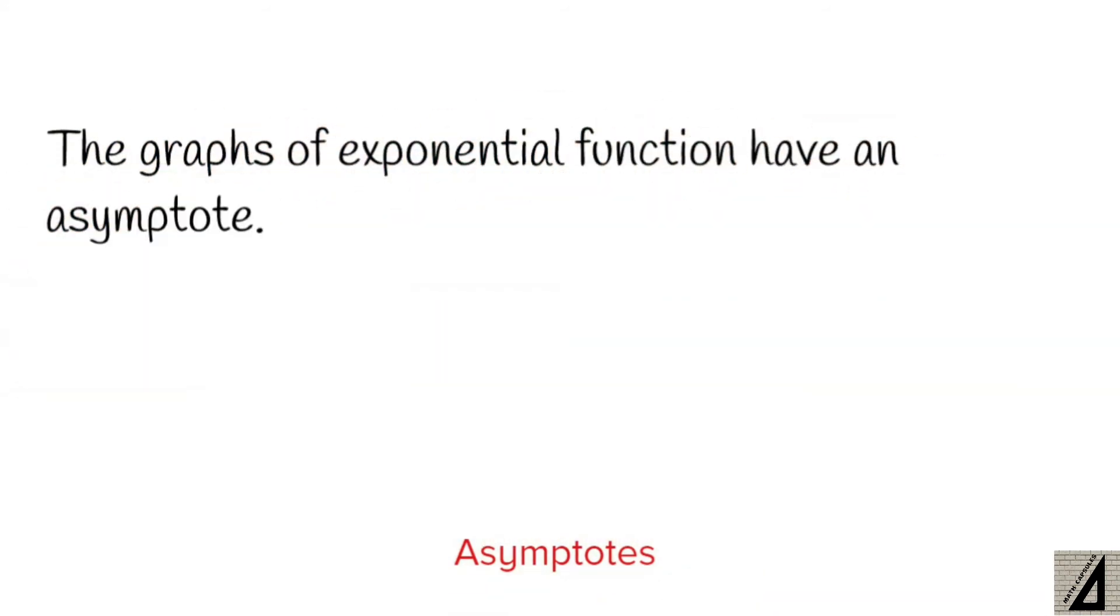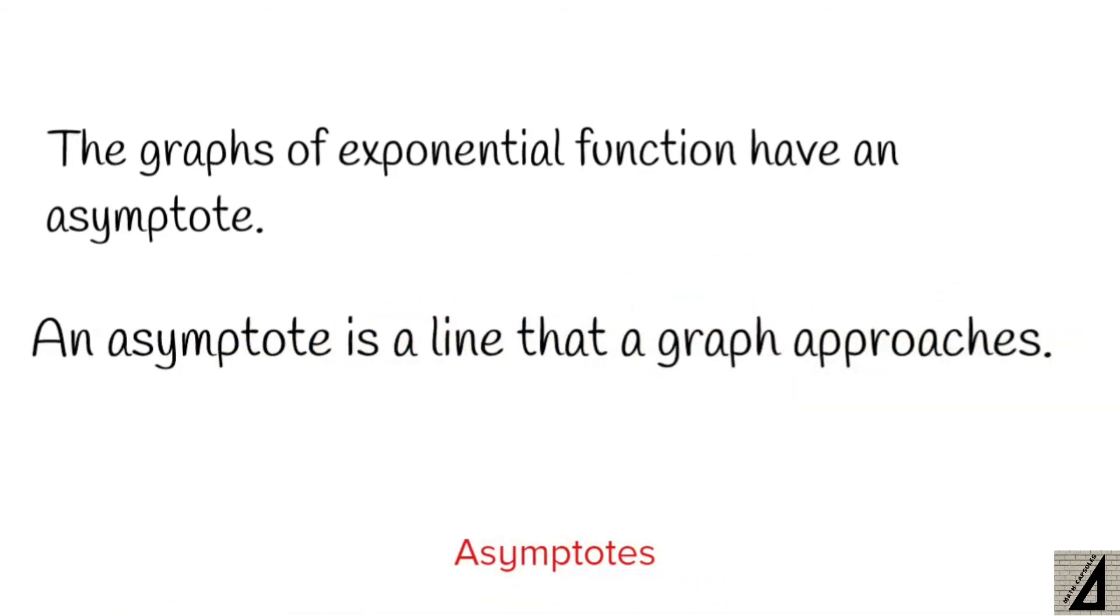The graph of the exponential function have an asymptote, and an asymptote is a line that a graph approaches.